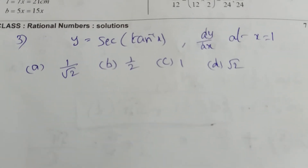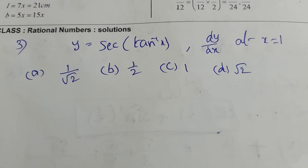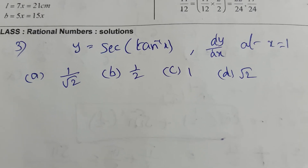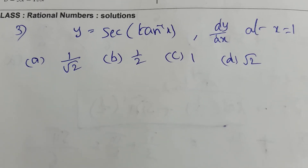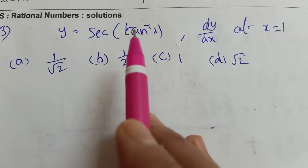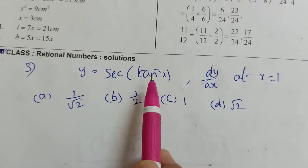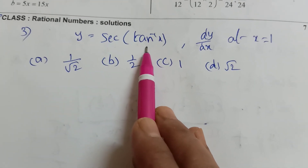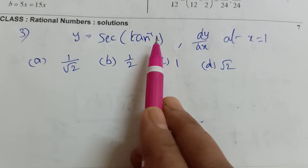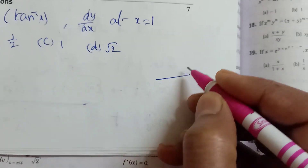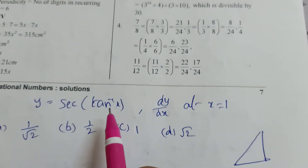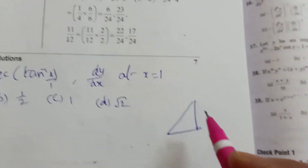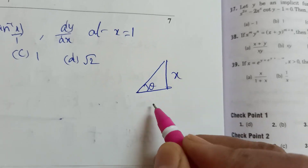Third problem: y equal to secant of tan inverse x. Find dy by dx at x equal to 1. Options: 1 by root 2, 1 by 2, root 2. Inverse is there — you convert the function like that. Secant is there, so you convert in terms of secant inverse. Tan inverse x is there, so first draw a right angle triangle. Tan means opposite by adjacent — x by 1. Opposite is x, adjacent side is 1.